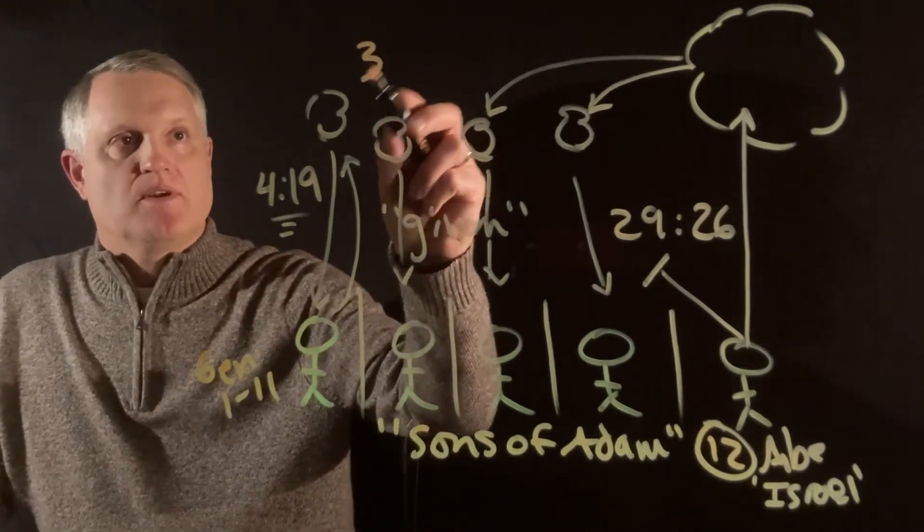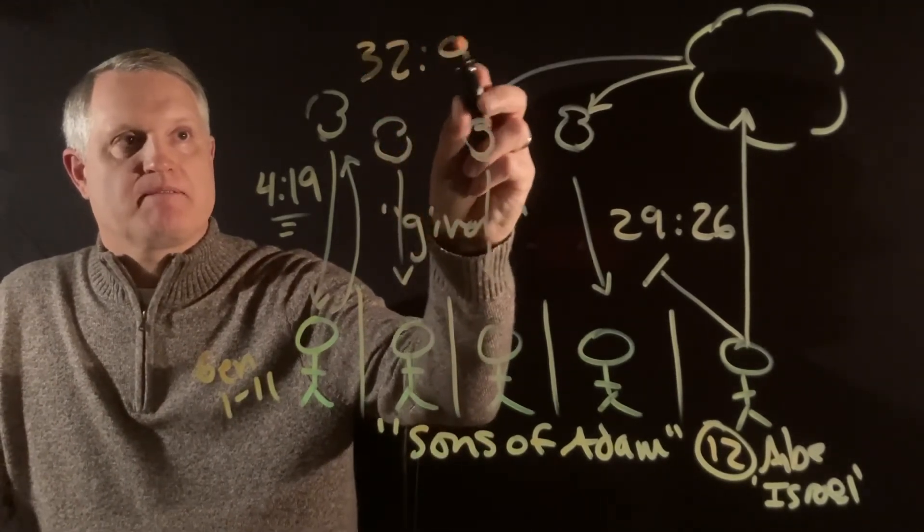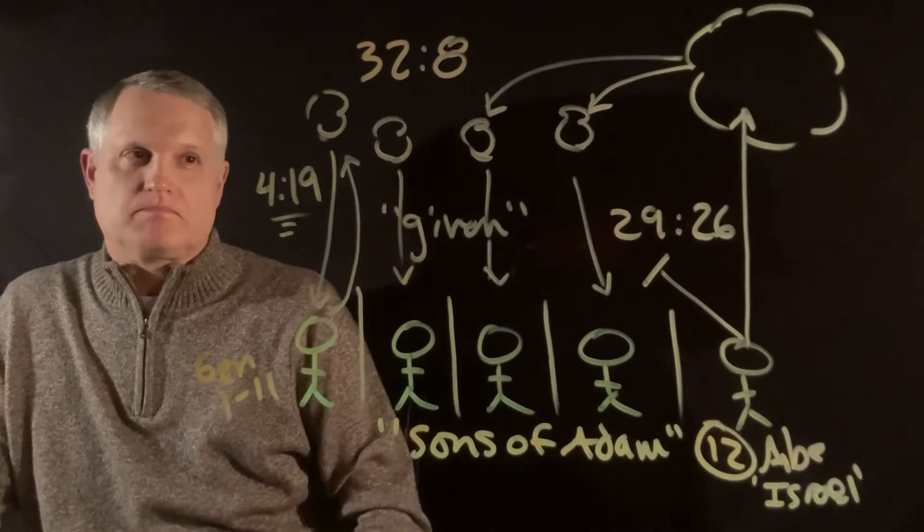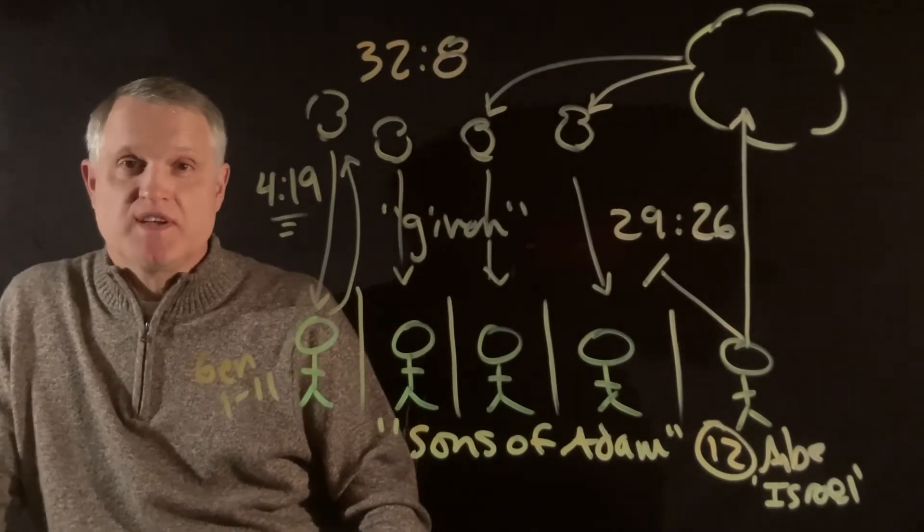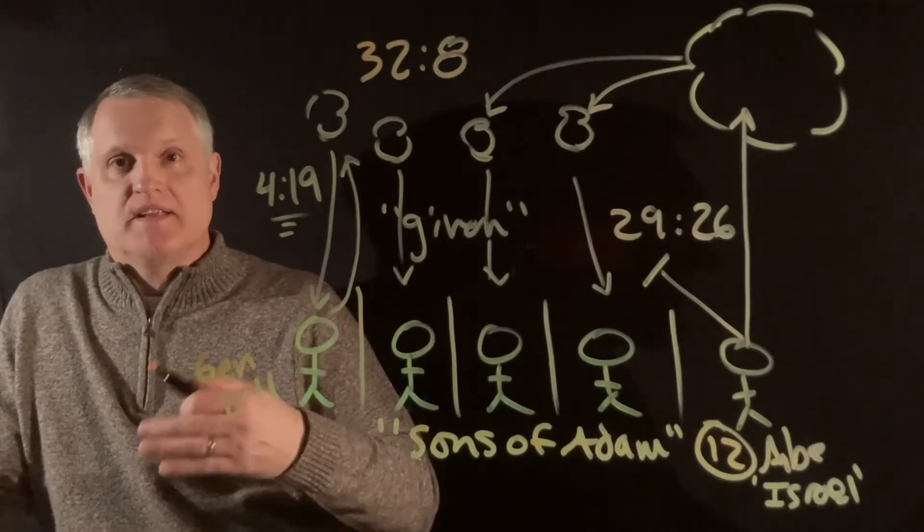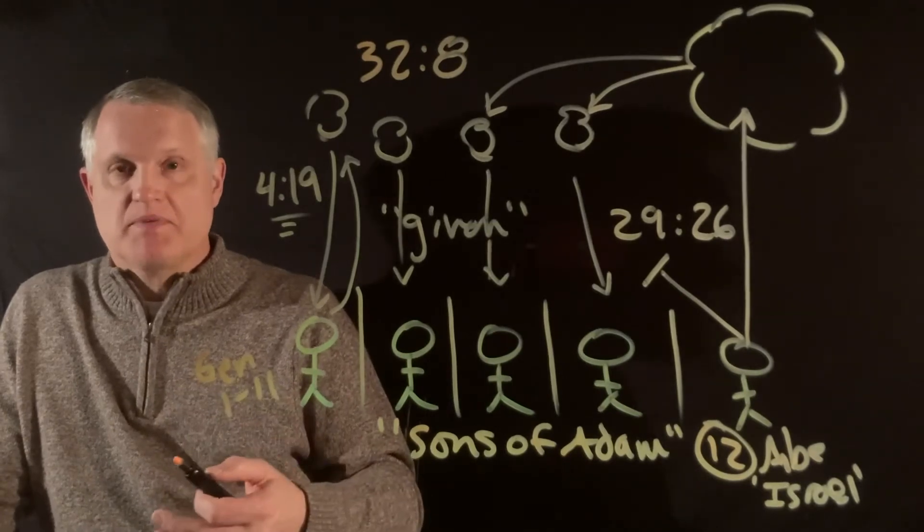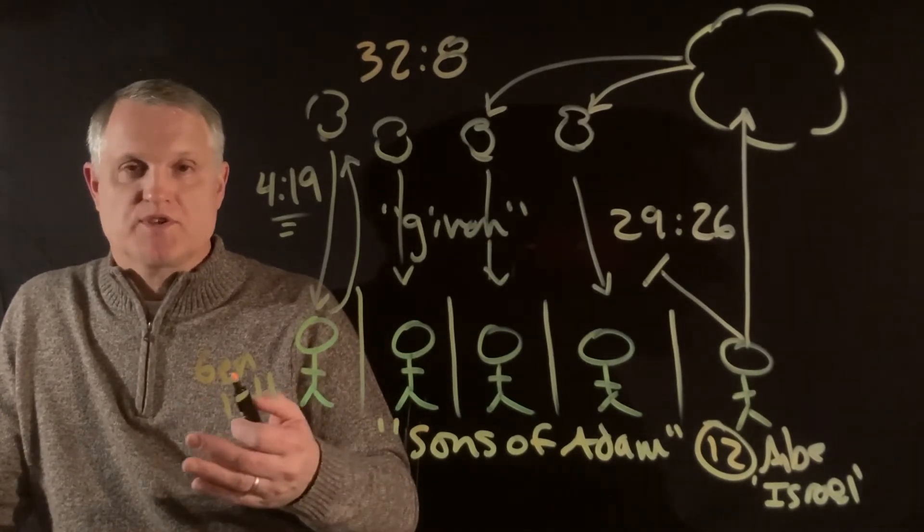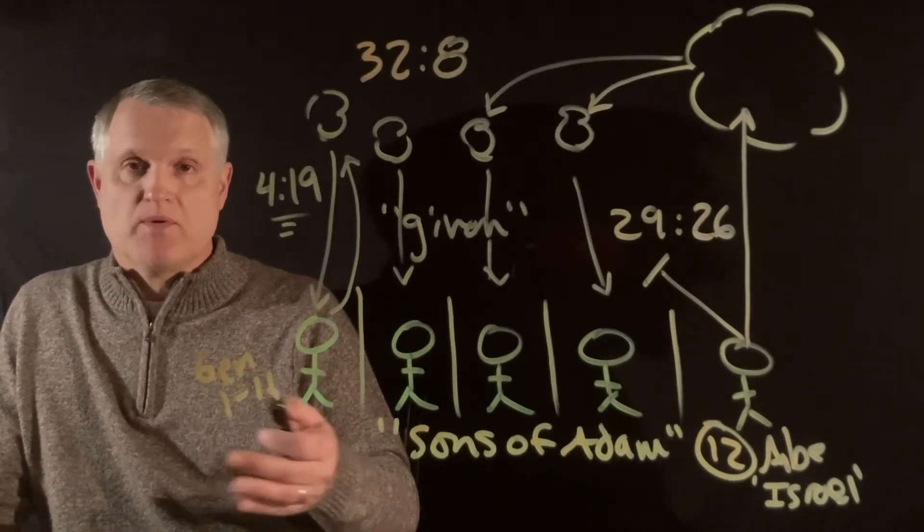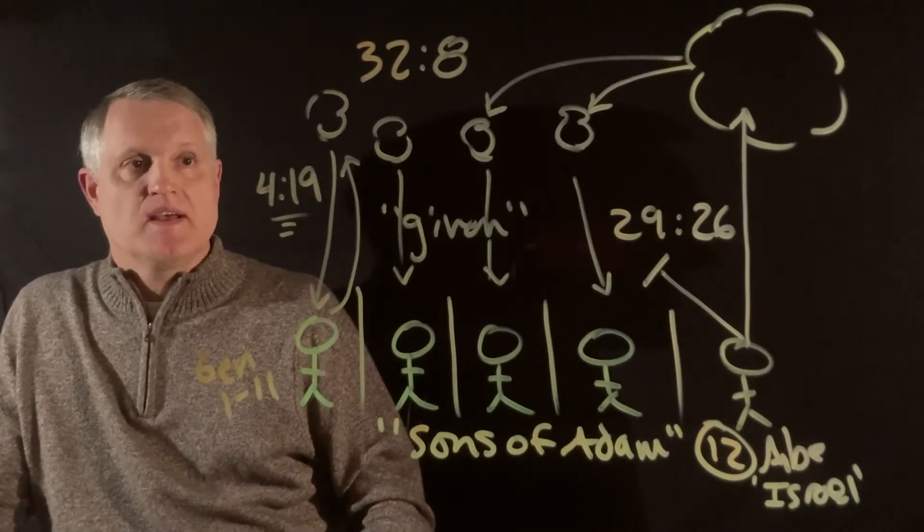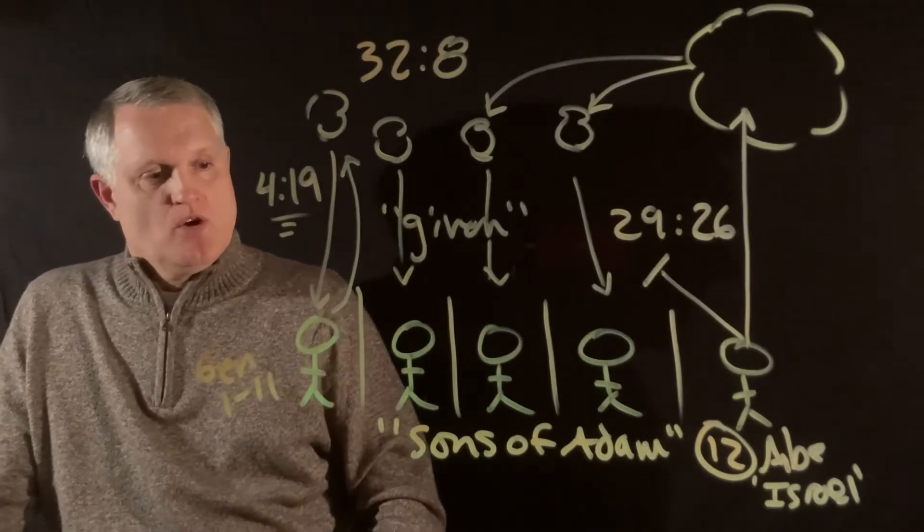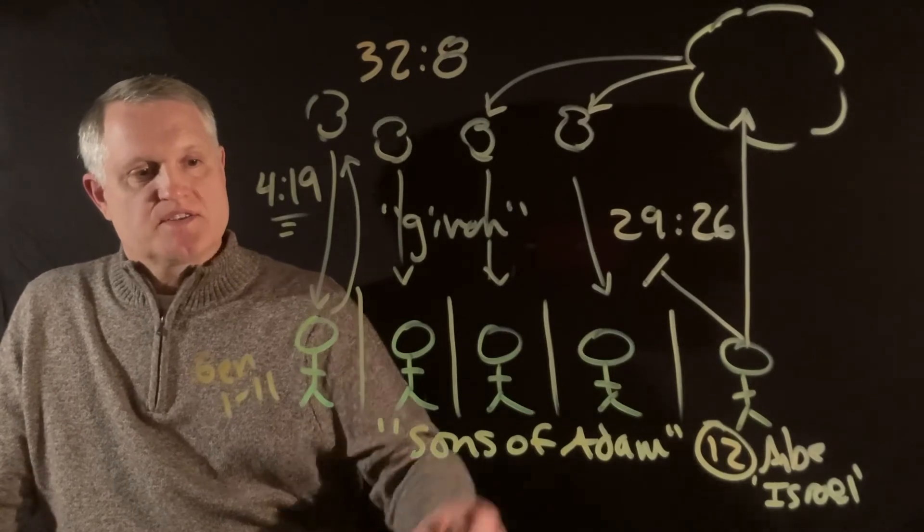All right, well, in 32:8, I want to bring this one up because it's a fascinating verse. The newer versions have caught how the verse should read based upon not just the Septuagint, the Greek version, but also the Dead Sea Scrolls when they were uncovered in 1947. They had this reading: when God separated the sons of Adam, talking about the Babel incident,